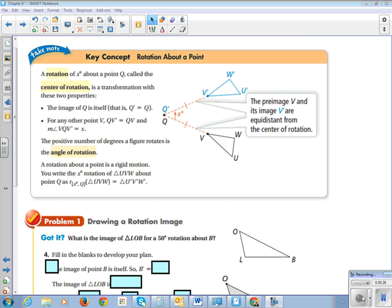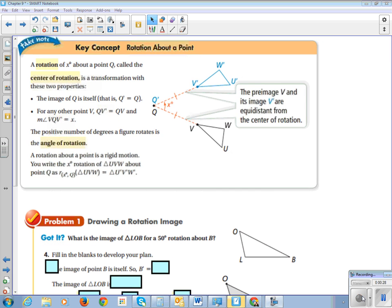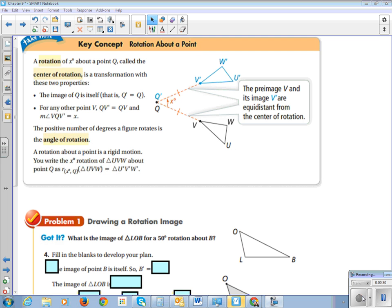Alright, so let's look at our important information. So a rotation of x about point Q is called, where Q is called the center of rotation, is a transformation with two properties. The image of Q is itself, Q prime is equal to Q.